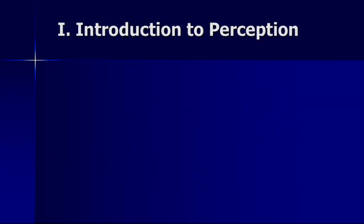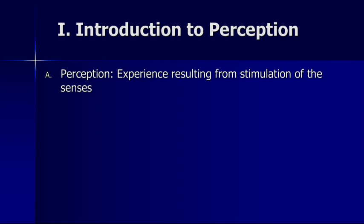Perception is our experience resulting from the stimulation of our senses. Sensation is generally what we refer to as activation of our sensory systems — light striking the back of the retina, sound waves striking your tympanic membrane, causing the perception of sound to be generated in the cochlea, etc. Perception is our experience of that, so how we interpret that information.